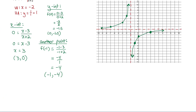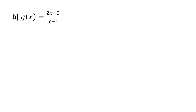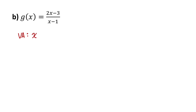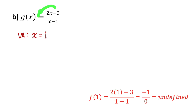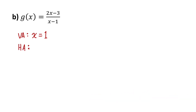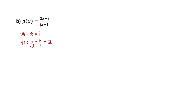Now let's move on to our second example. We have another quotient of two linear functions, so the graph will form a hyperbola with both a vertical and horizontal asymptote. For the vertical asymptote, an x value of one makes the denominator be zero — subbing in one gives negative one over zero, which is undefined. So there's a vertical asymptote at x equals one. The leading coefficients are two and one, so the horizontal asymptote is at y equals two divided by one, which is y equals two.